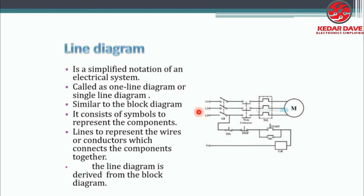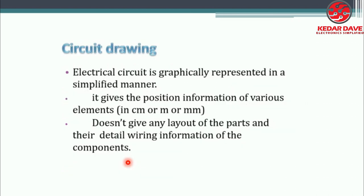The line diagram is derived from the block diagram and consists of symbols to represent the components, and lines to represent the wires or conductors which connect the components together. Every equipment in the circuit will be represented.